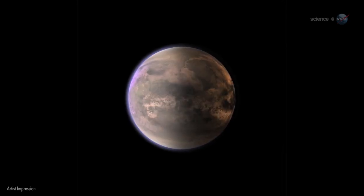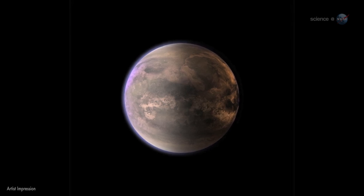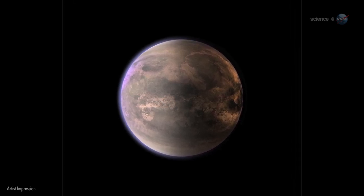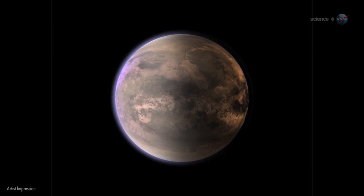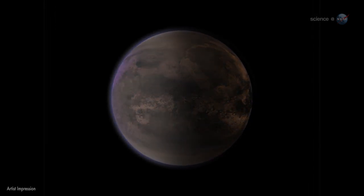When 55 Cancri e was discovered in 2004, initial estimates of its size and mass were consistent with a dense planet of solid rock. Spitzer data suggests otherwise.